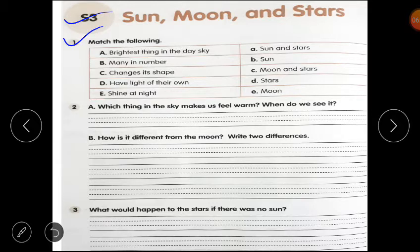First question: Match the following. Aapko match karna hai. So, a part is brightest thing in the day. Day mein sabse brightest thing kaun si hoti hai? Sun. Many numbers. Numbers mein bohot zyada kaun hoti hai? Stars. Change its shape. Apne shape ko kaun change karta hai? Moon. Have light of their own. Inki khud ki light hoti hai. Sun and star ki. Shine at night. Night ko kaun shine karta hai? Moon and stars. So you have to complete this question.